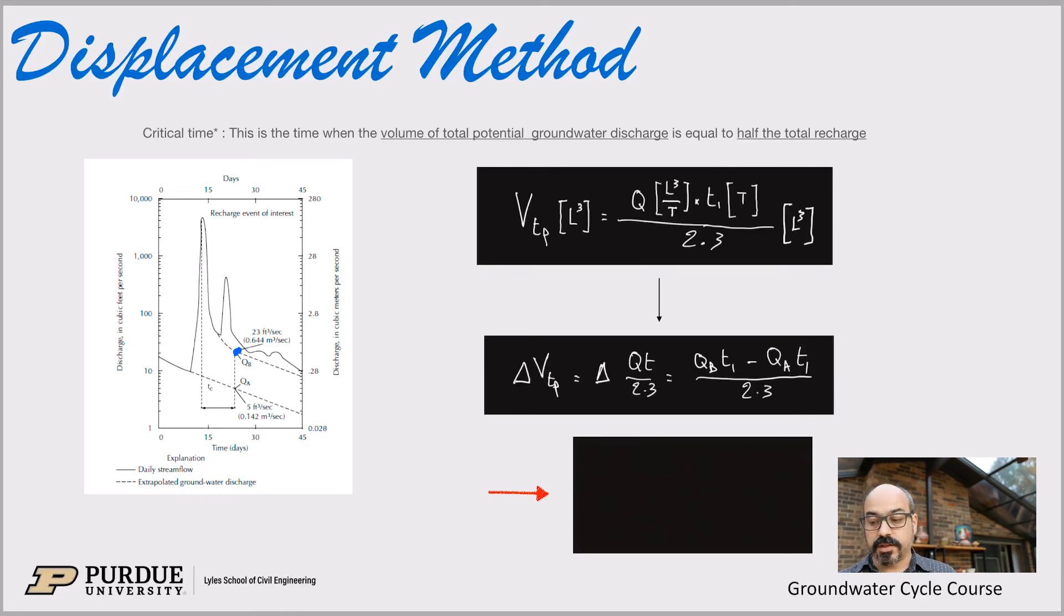So once you have the - and this is a volume. So this is the discharge times the time. And the 2.3 here is just a constant, you modify because you're in log 10 here to the normal log. So don't worry about the 2.3, just in the cookbook, basically. And that will somewhat disappear in the next slide. What's important to understand is that that volume is just a discharge times T1. So if you look at discharge times T1, what you get is basically this volume, this whole volume here.